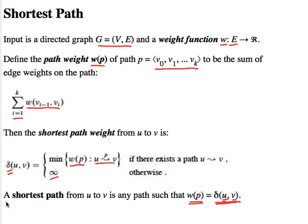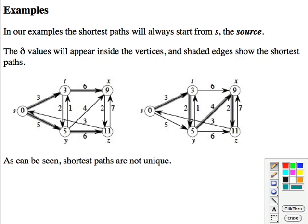We say a shortest path because there can be more than one. The fact that shortest paths are not unique can be seen in these two examples. The same graph, we've got two different paths.